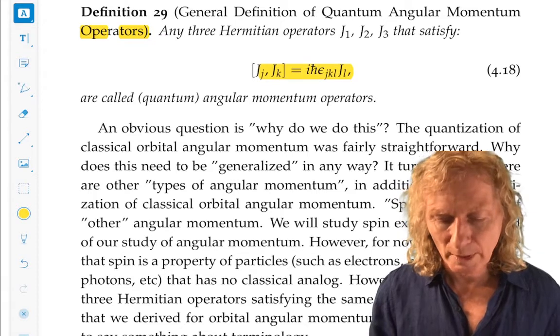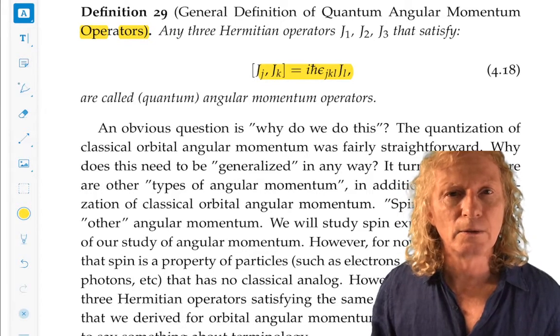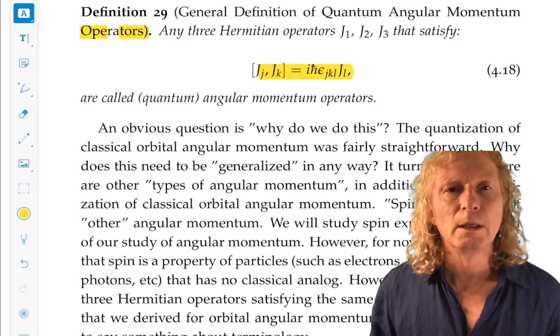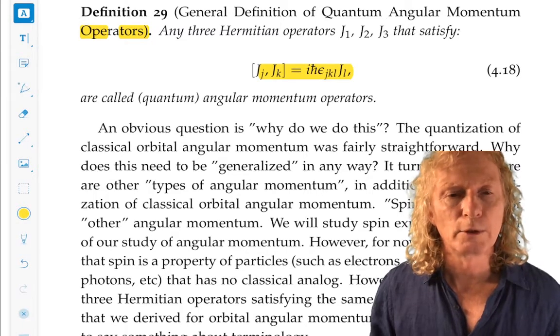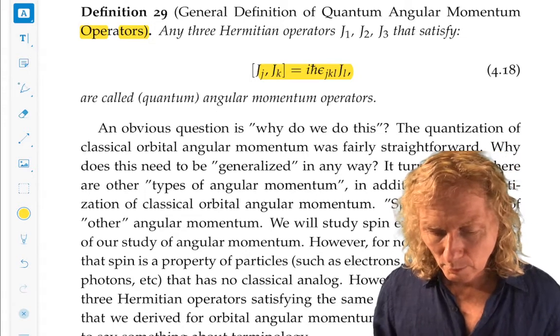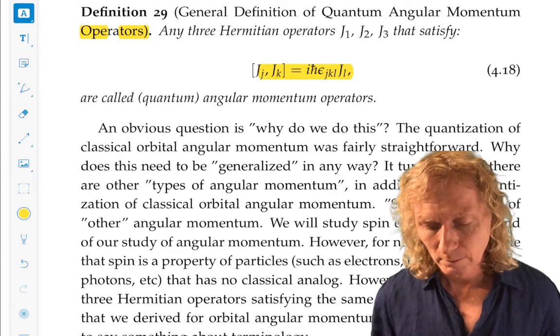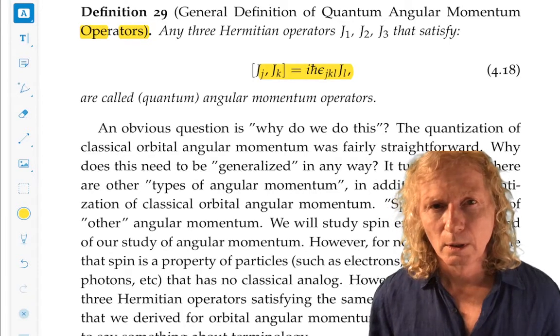So we have difficulties. In fact, we cannot find a basis that is common to each self-adjoint operator, J1, J2, and J3. Remember we had a theorem about that earlier on. So what do we do?